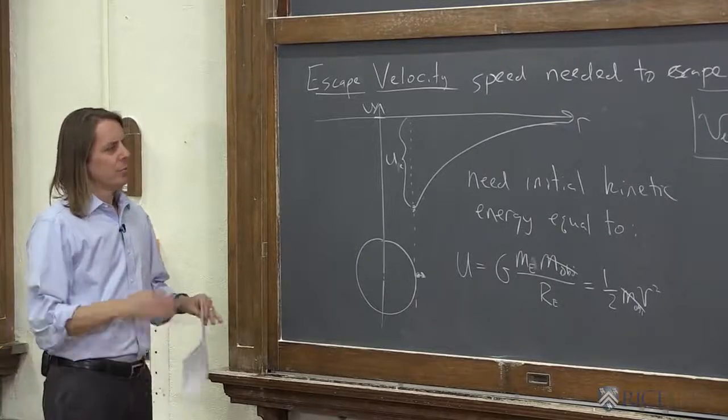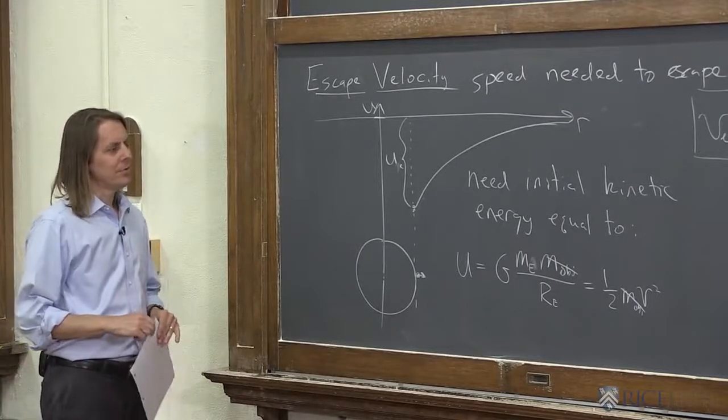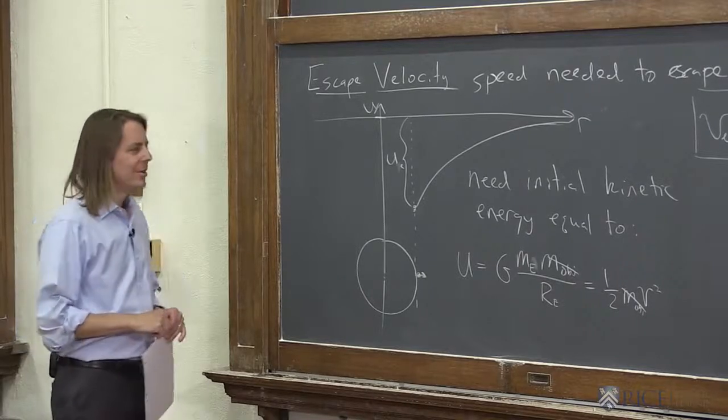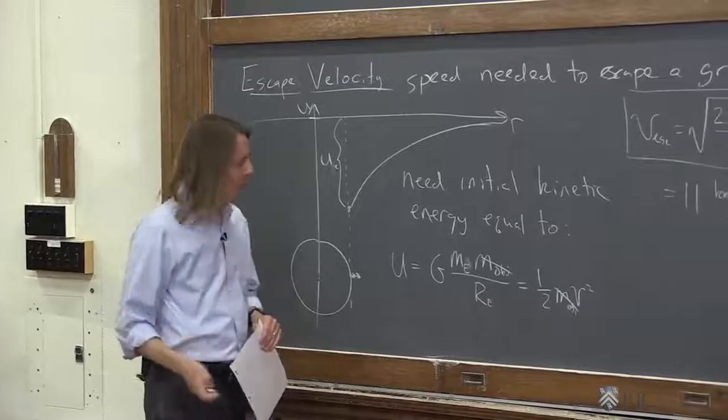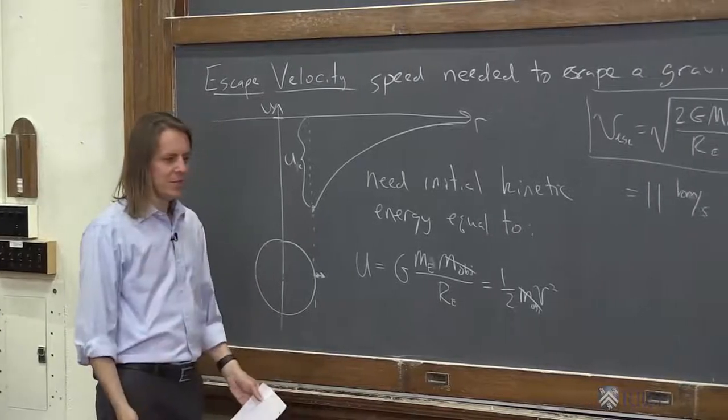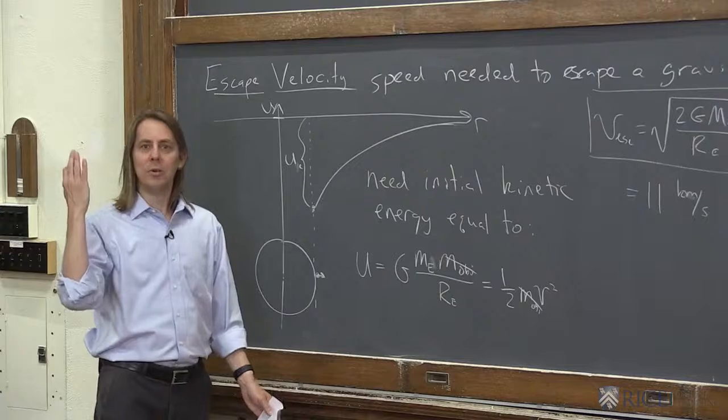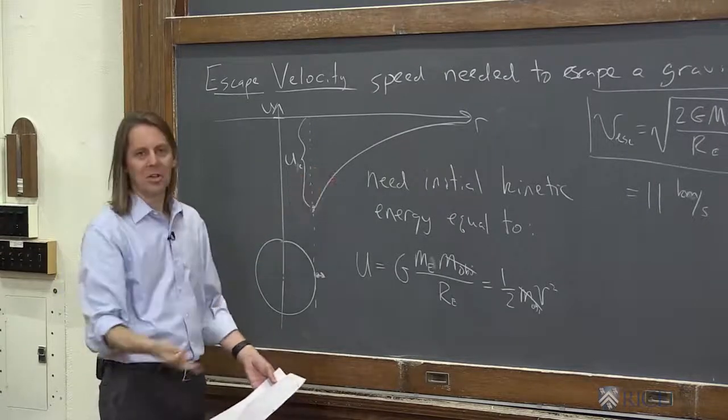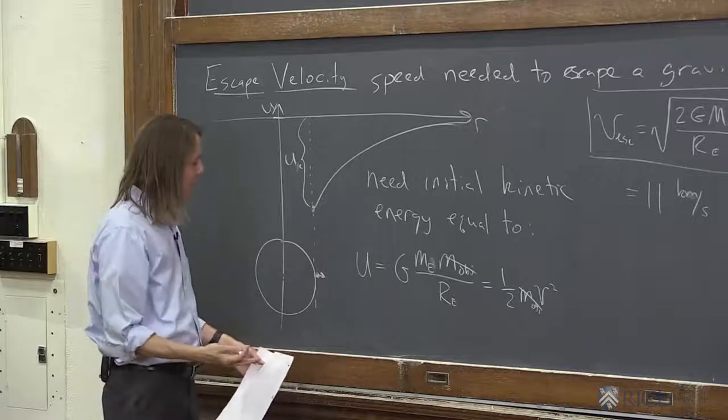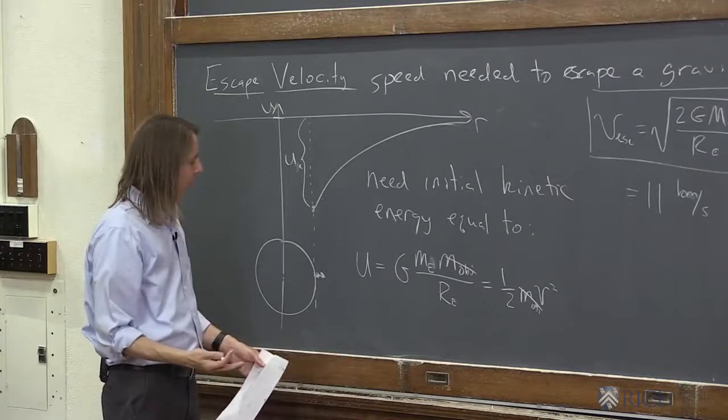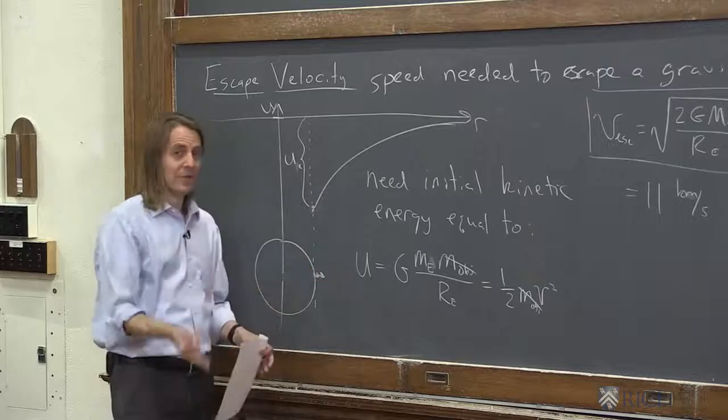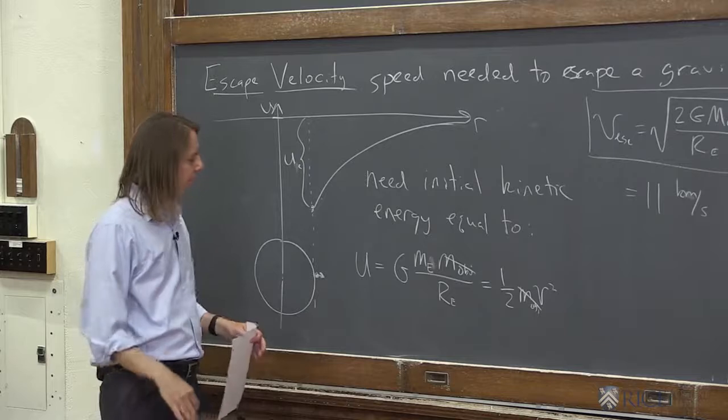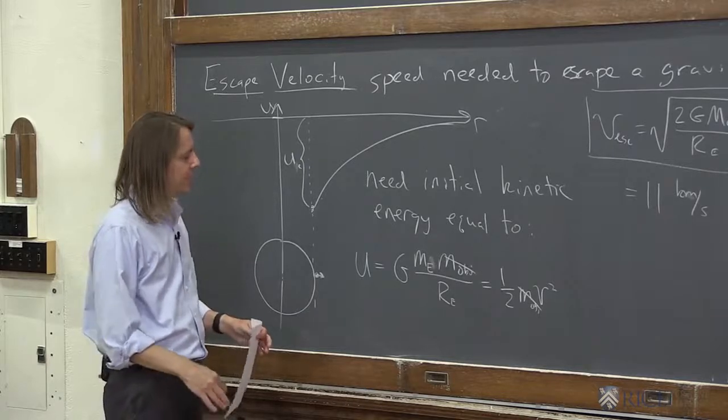So really, this sort of simple calculation of escape velocity isn't what NASA uses to put spaceships in orbit, for many reasons. One is you don't just give it all its kinetic energy at the surface and then just watch it go, because it would burn up in the atmosphere. You don't really want to go 11 kilometers per second in the Earth's atmosphere. You would burn up and fall apart. So, of course, what a rocket really does is it pushes as it goes. It gains kinetic energy as it thrusts and the rocket comes out of the back. It doesn't give it all at once.